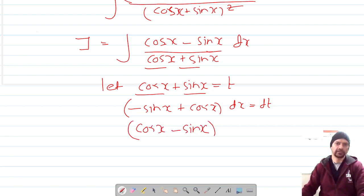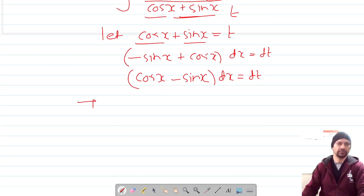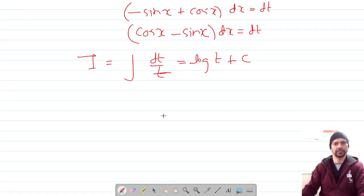So (cosx minus sinx) dx equals dt. Finally, I reduces to dt/t, which equals log of t plus c.